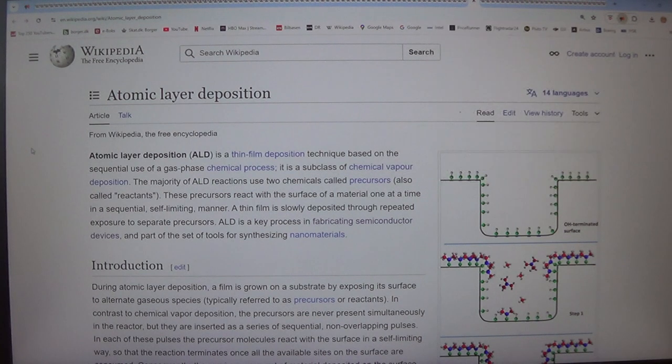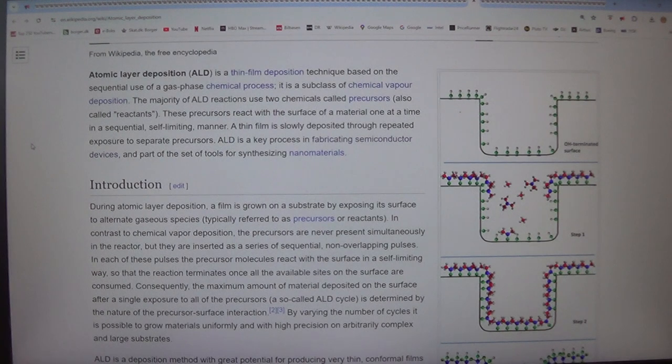Atomic layer deposition. ALD is a thin film deposition technique based on the sequential use of a gas phase chemical process. It is a subclass of chemical vapor deposition. The majority of ALD reactions use two chemicals called precursors, also called reactants. These precursors react with the surface of a material one at a time in a sequential, self-limiting manner. A thin film is slowly deposited through repeated exposure to separate precursors. ALD is a key process in fabricating semiconductor devices and part of the set of tools for synthesizing nanomaterials.